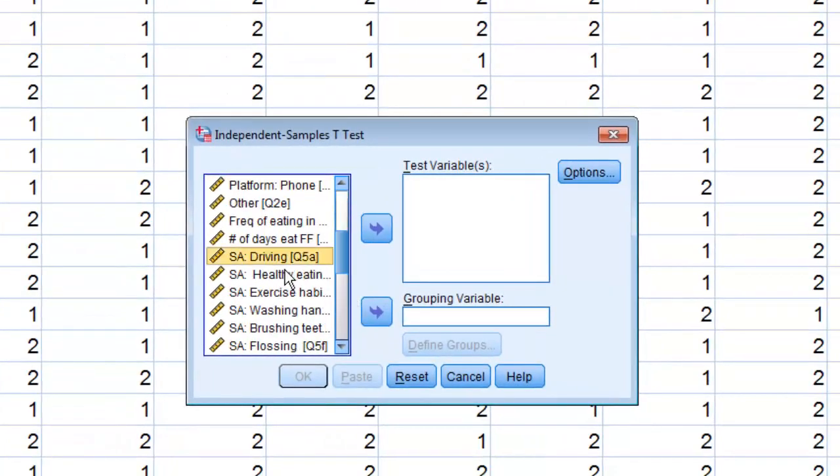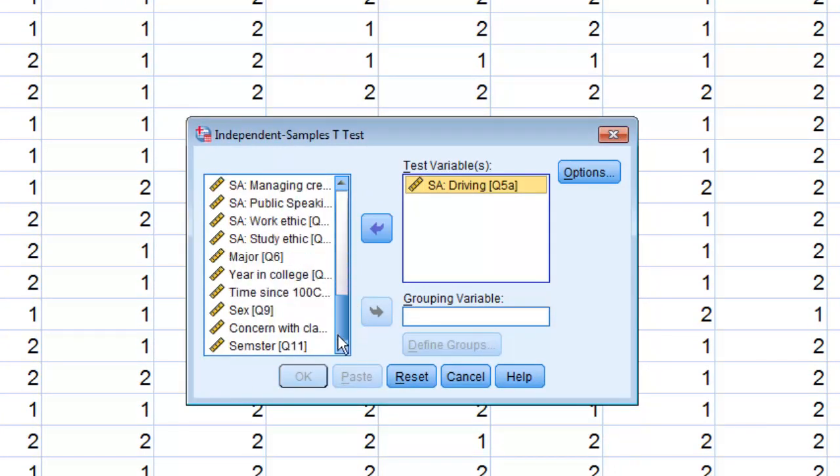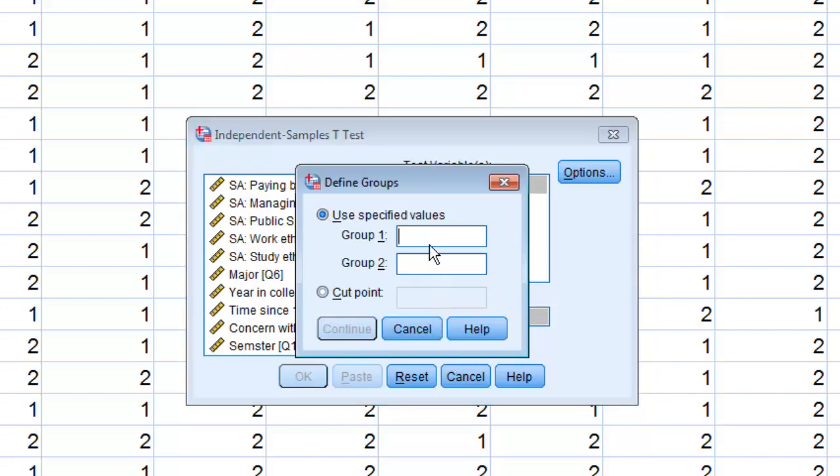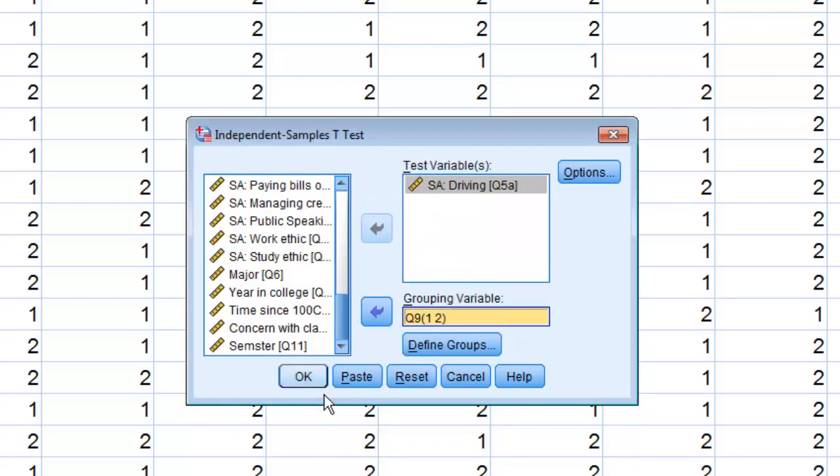Now we'll scroll down. Driving is our test variable because it's our dependent variable, and sex is our grouping variable. It's our independent variable. Define groups. Category 1 is male, and category 2 is female. Continue. OK.